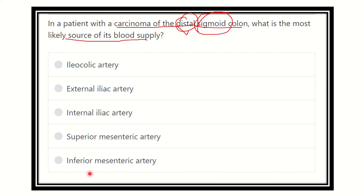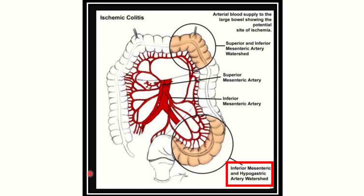Let's look at the colon first. Here we can see the whole colon — this is the appendix, this part is the ascending colon, then the transverse colon, then the descending colon, and this part is the sigmoid colon, then the rectum and anal canal.